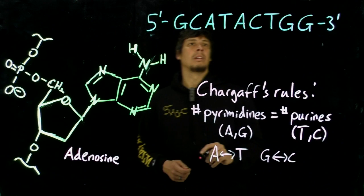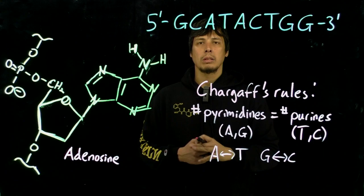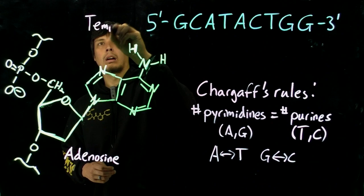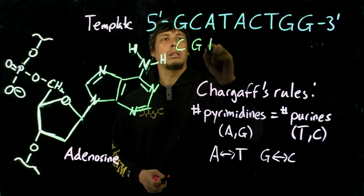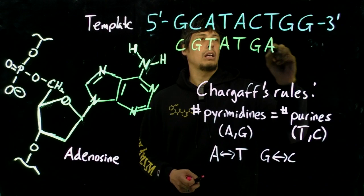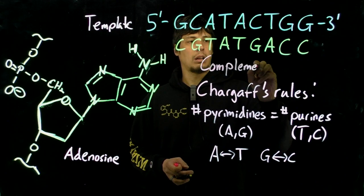So we know that if we have a single strand of a DNA polymer, then we can predict exactly what the complementary strand would be. So we would call this the template strand. And then we would have the complement strand would be C, G, T, A, T, G, A, C, C. So this is called the complement strand.